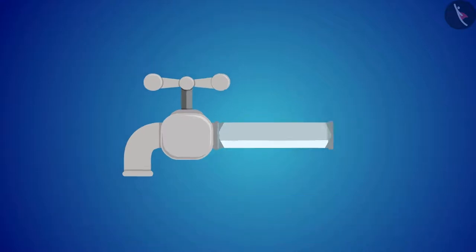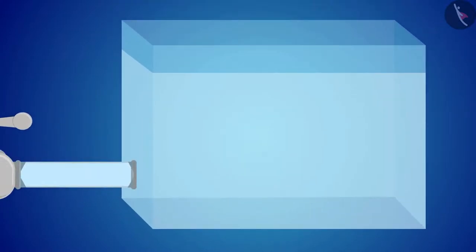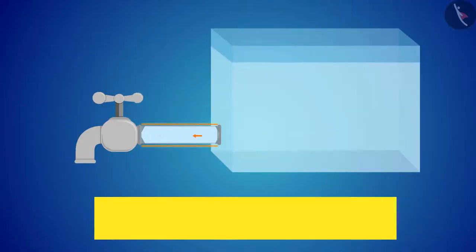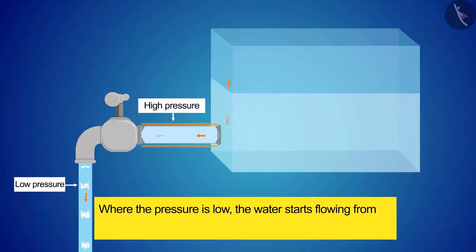To create this pressure, the water pipe should be connected to a water tank. As there is plenty of water in the tank, there will be more pressure in the mouth of the pipe. And as soon as we open the tap where the pressure is low, the water starts flowing from the area having high pressure to the area having low pressure.